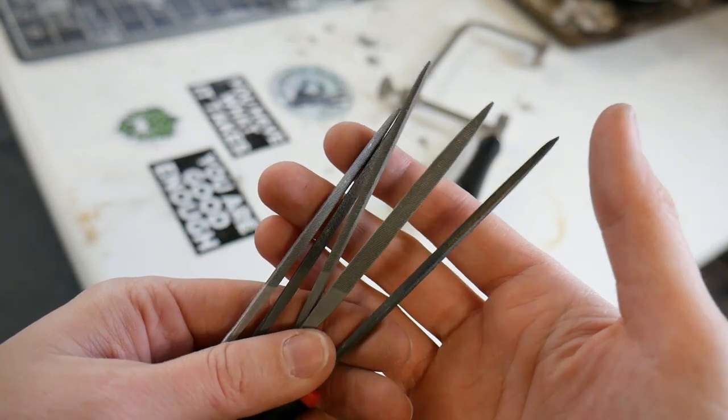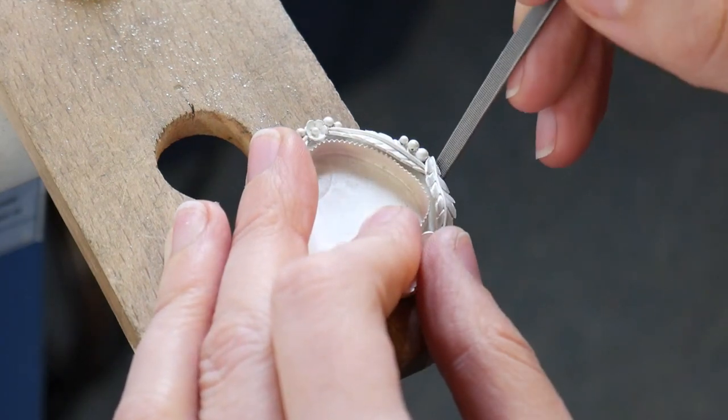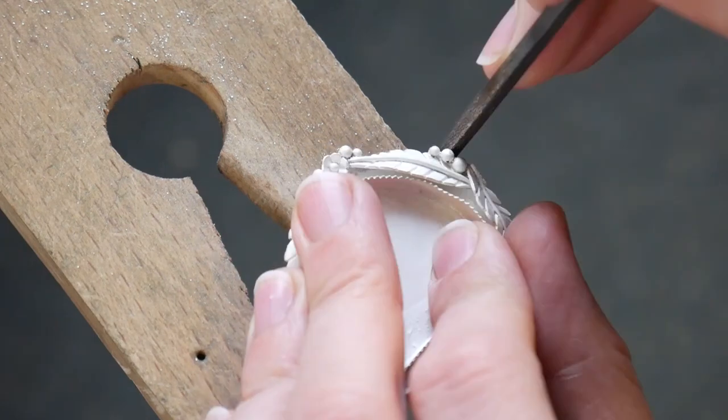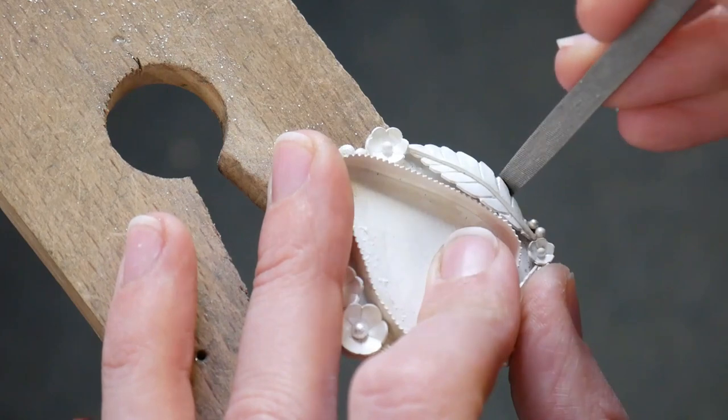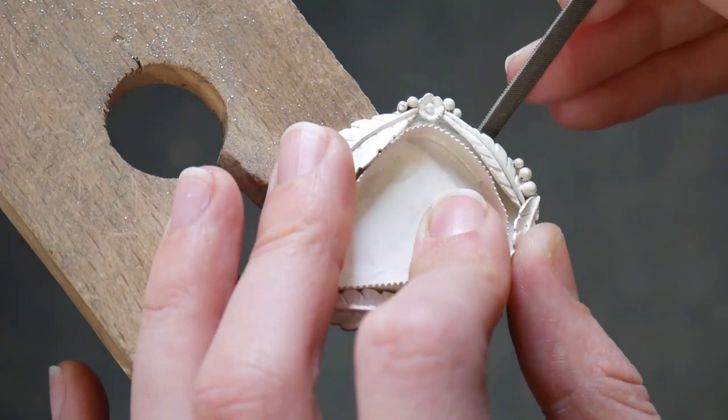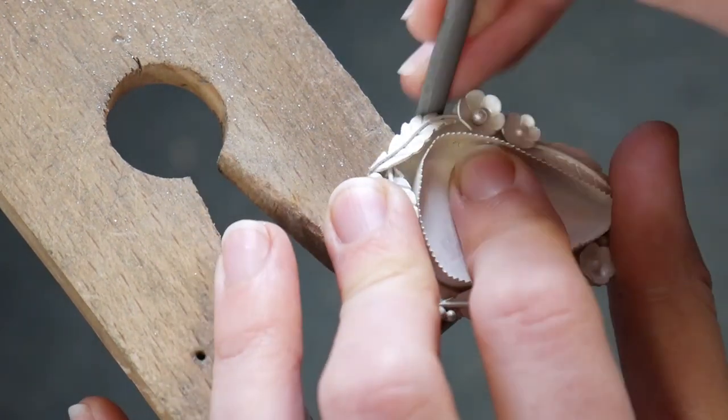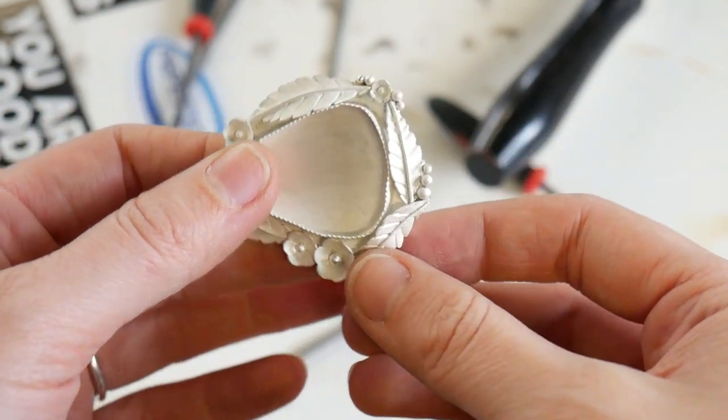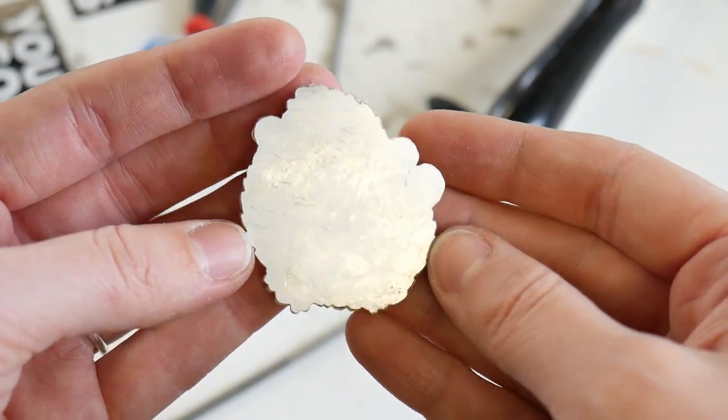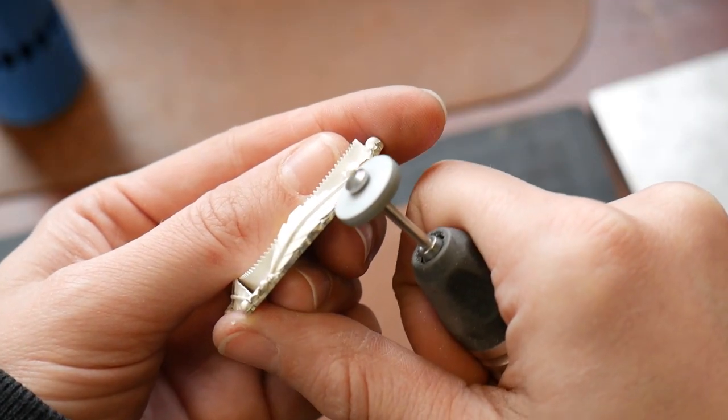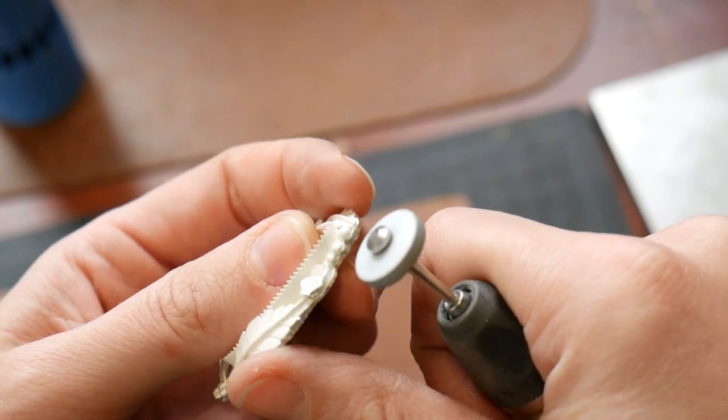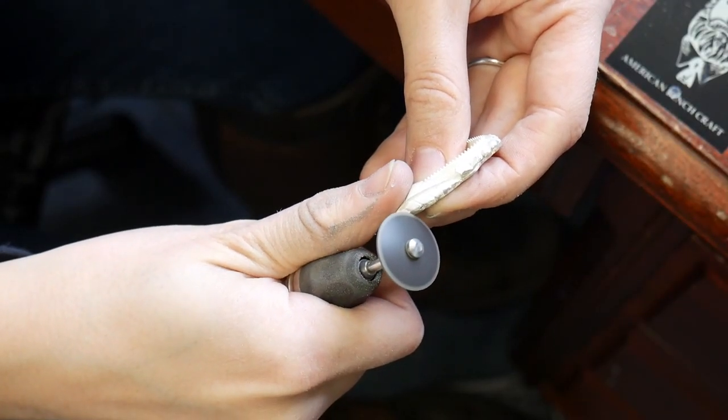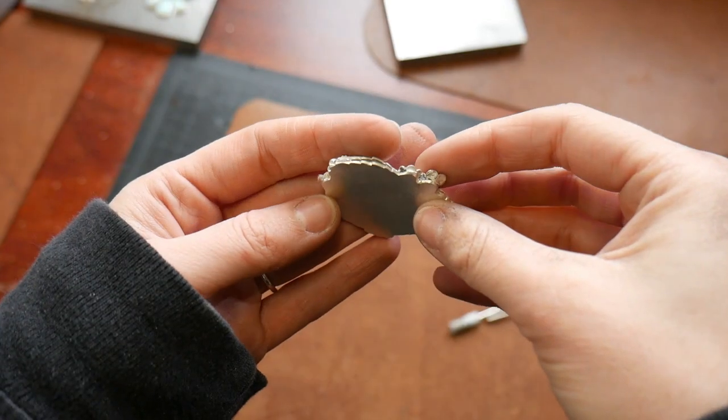Now I'm going to be using these needle files to fine-tune the shape of the piece even more. I have a variety of different shapes and sizes I like to alternate between using depending on my need. Now I'm going to be using a white silicone polishing wheel to once again fine-tune the shape of the piece and smooth out the edges. I then am going to use this black knife-edge silicone polishing wheel to really get into those tight corners and try to remove any marks made by my saw blade and by my files.